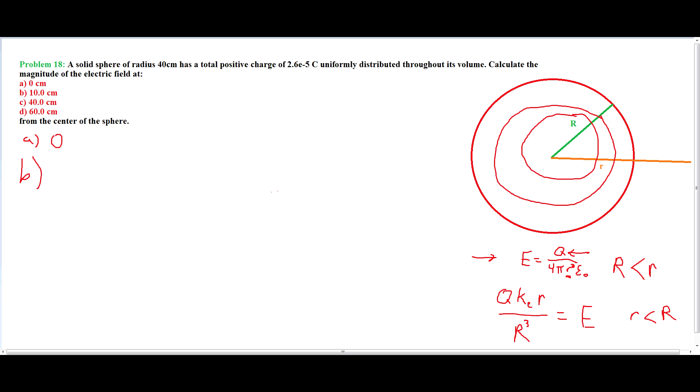For 10 centimeters, we use the equation down here. Sorry, for A, we should use the equation down here, too. So now, what we do is, we just plug in the numbers. And we have q ke times 0.1 meters...